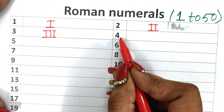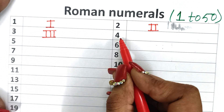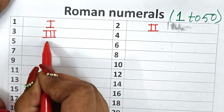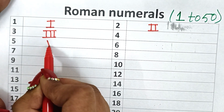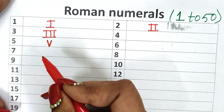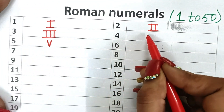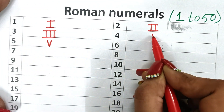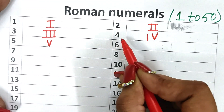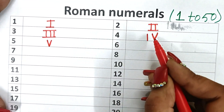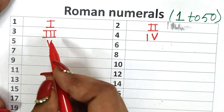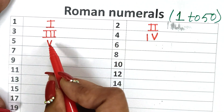Before writing 4, we must know how to write 5. So how do we write 5? 5 is written with V. So now how do we write 4? First we will write 5 and then we will subtract 1 from it, so it will become 4. So how you write 4: I and V. Okay, 4 is IV and this is 5, which is V.